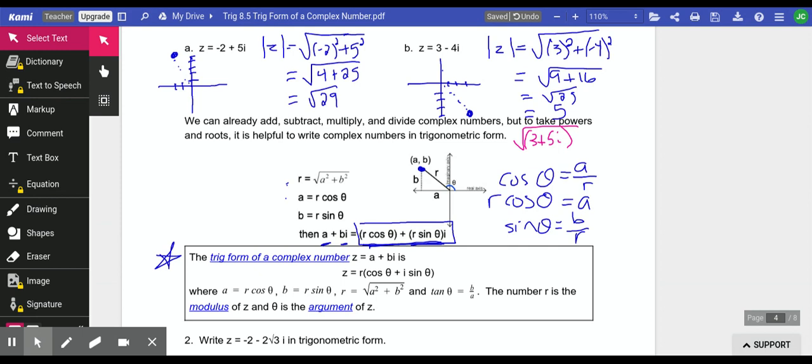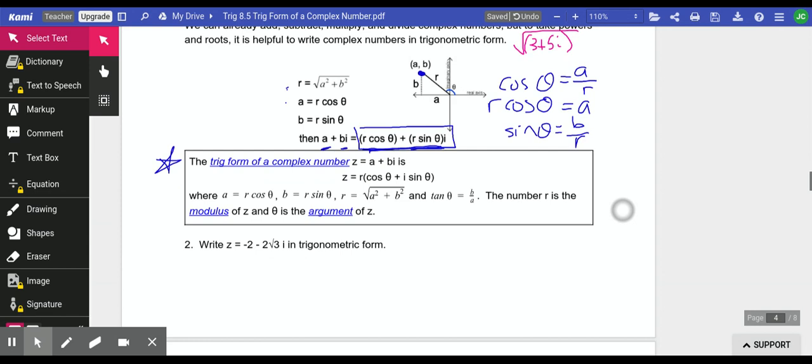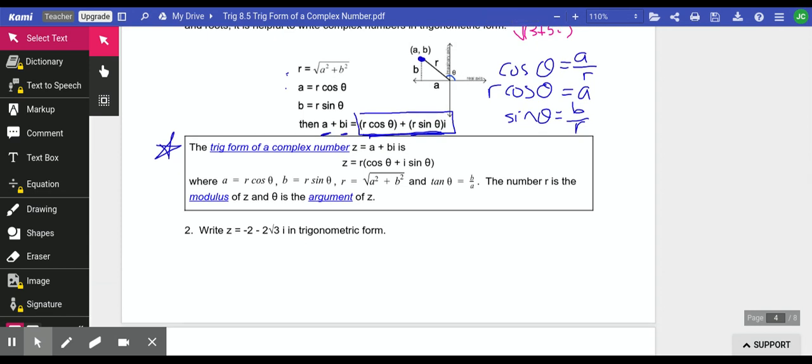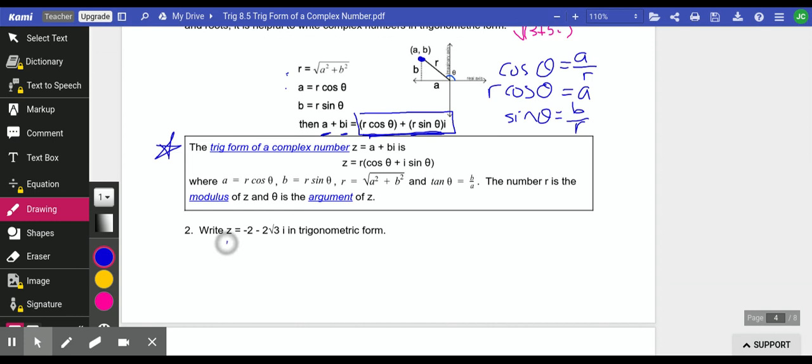Let's do one of these problems. We want to write this complex number, negative 2 minus 2 root 3i, in trig form. Best thing to do is graph it. We're at negative 2 in this direction, and then we're down negative 2 root 3, and we're just going to make that little triangle.